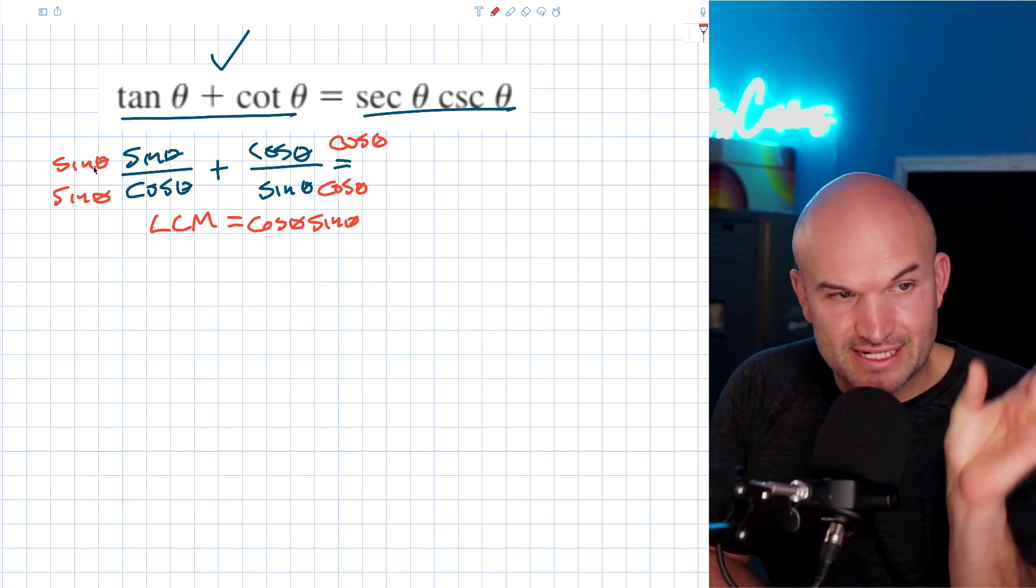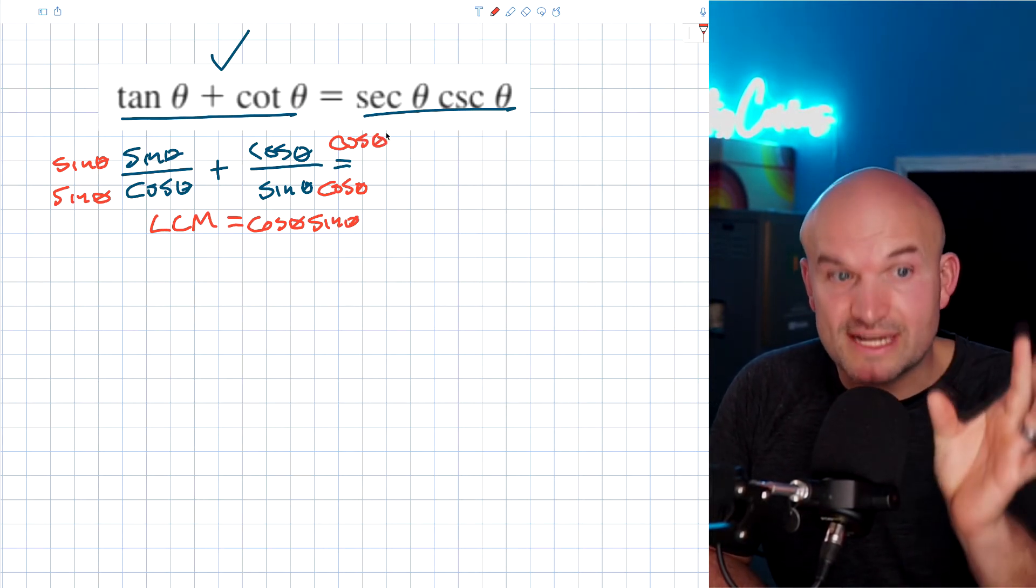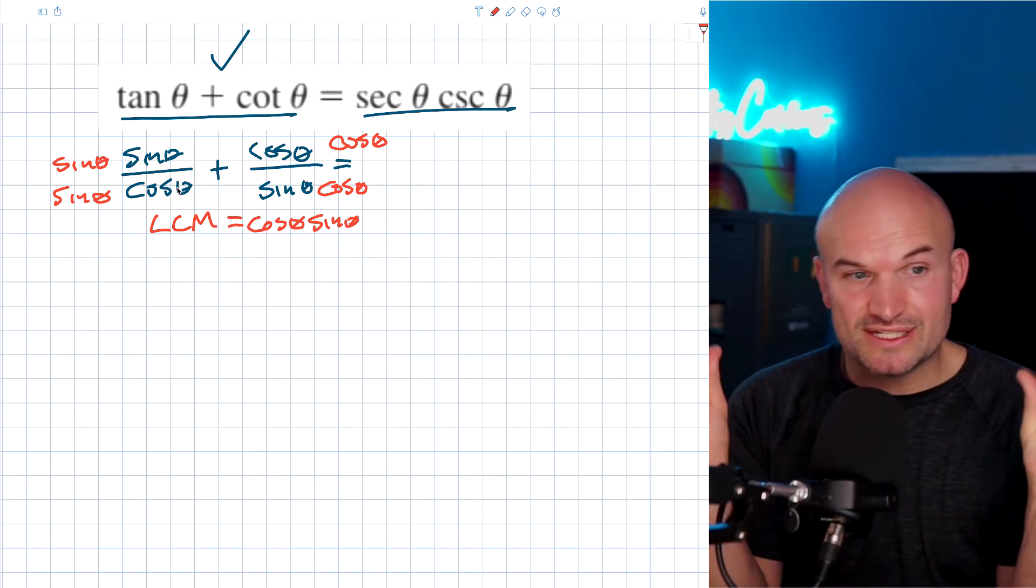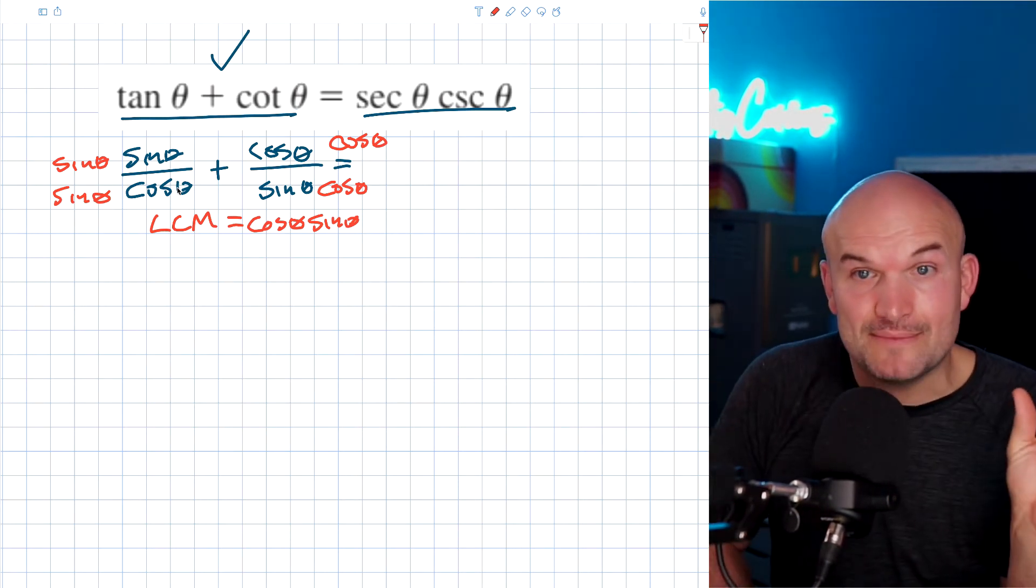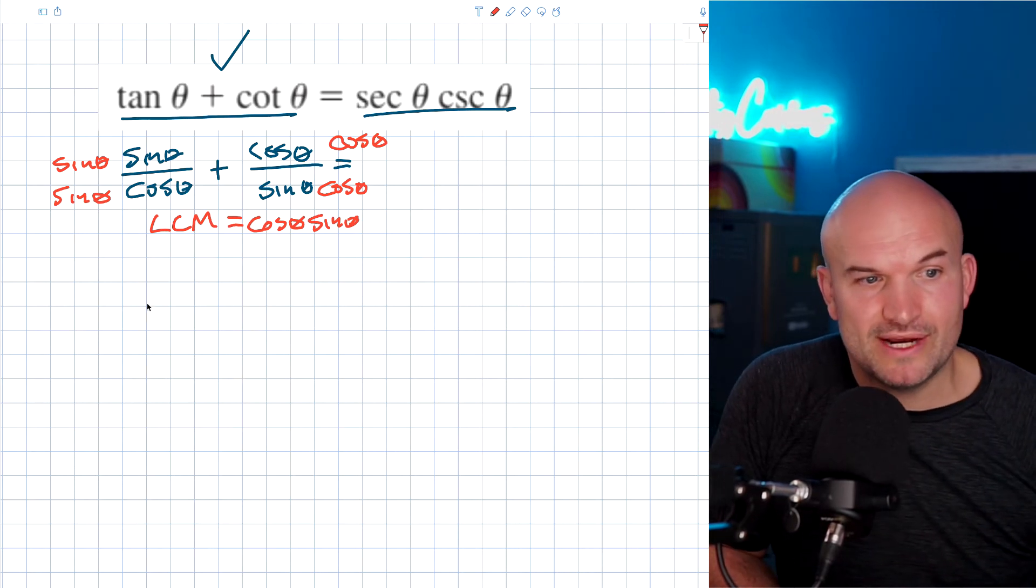So now what we're going to have here is sine squared of theta plus cosine squared of theta. And then, now you can see that the denominators are exactly the same. So therefore we can rewrite them all under one denominator.